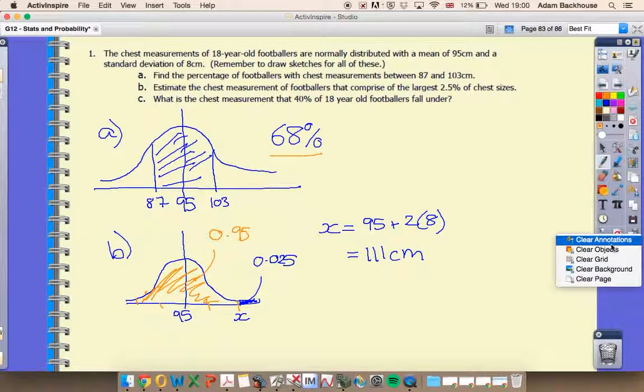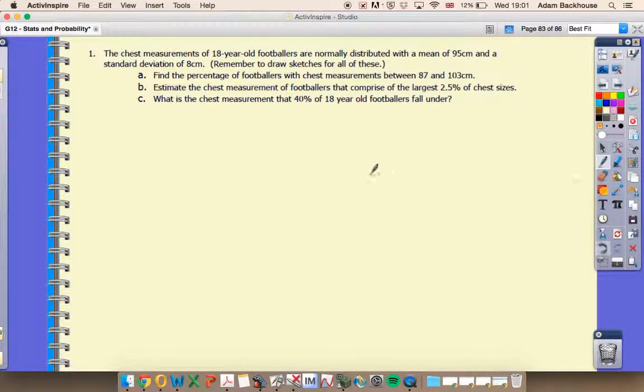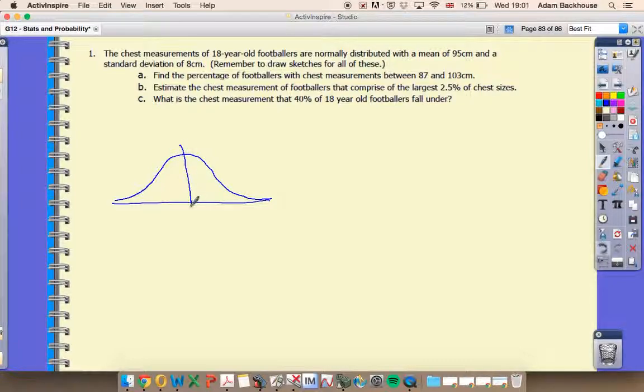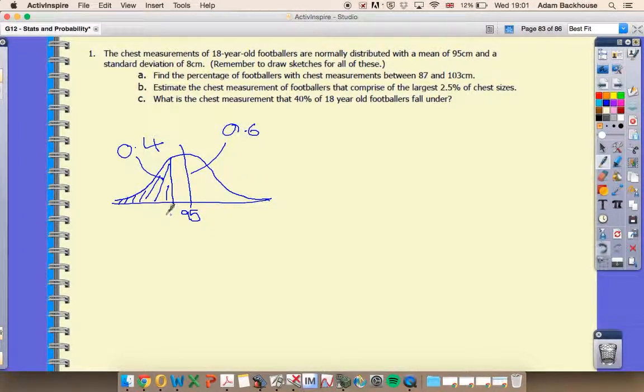We're going to look at the last of these parts now, part C. We're looking at the chest measurement that 40% of our footballers fall under. So mark the mean, which of course is 50%. If the question had been 50%, this would have been very easy. 40% is going to be to the left of this, so that's our 40%, and the rest is 60%. We're after this value here, so I know I'm looking for an answer smaller than 95.